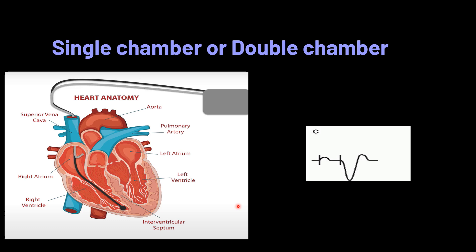The third type is the dual chamber pacemaker, which has one lead in the ventricle and one lead in the atrium. It looks for a P wave; if no P wave is sensed, the pacemaker delivers a stimulus to the atrium and the spike is followed by a P wave. After a programmed AV interval (the electronic PR interval), if no QRS complex is detected, a second stimulus is delivered to the ventricle, producing a pacing spike followed by a QRS complex.